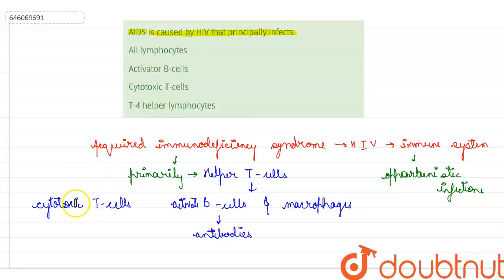Third says cytotoxic T cell, that is also wrong because it primarily or directly does not involve the cytotoxic T cells. It infects the helper T cells through which the cytotoxic T cells are affected. So they are not directly or principally infecting the cytotoxic T cells, so this one is incorrect.